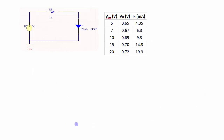I re-simulated the circuit changing the 5-volt source to 7, 10, 15, and 20 volts, and looked at the diode voltage and current under each condition. Remember that in Model 2 we assume a constant 0.7 volts across the diode. The actual simulated diode voltages were 0.65, 0.67, 0.69, 0.70, and 0.72 volts, showing that the 0.7-volt approximation is actually quite good for a Model 2 analysis.